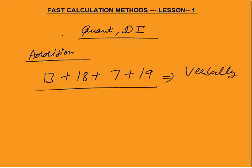13 plus 18 would be 31. 31 plus 7 is 38. 38 plus 9 is 47, plus 10 is 57. So you must be able to add these numbers verbally.